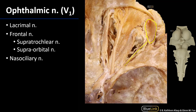The frontal nerve is the most robust branch of V1 and has two major branches: the supraorbital nerve, typically the larger of the two, and the supratrochlear nerve. The supraorbital nerve is more lateral whereas the supratrochlear nerve is more medial. The supraorbital nerve has both medial and lateral branches, and people often confuse that medial branch of the supraorbital nerve with the supratrochlear nerve. The supratrochlear nerve is much more medially oriented, heading out toward the trochlea.